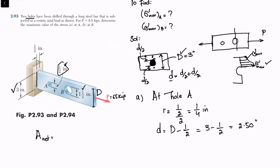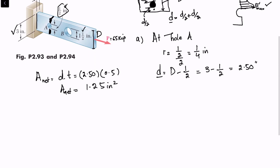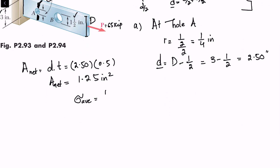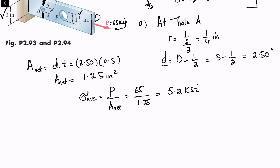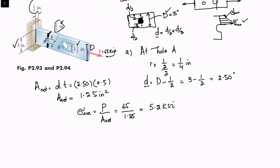Net area for hole A equals d times thickness t. d is 2.50 and thickness t is 1/2 (0.5), so net area equals 2.50 × 0.5 = 1.25 square inches. Average stress equals load per unit net area: 65 divided by 1.25 equals 5.2 ksi. Due to this load, there will be stress concentration at hole A.